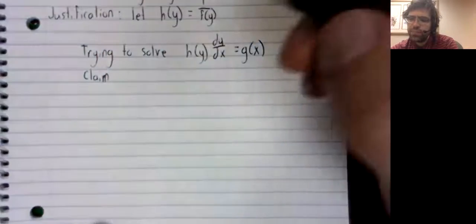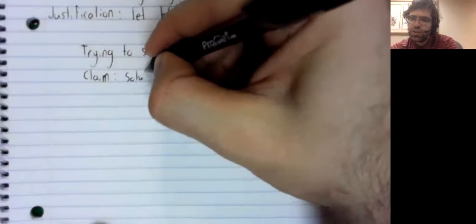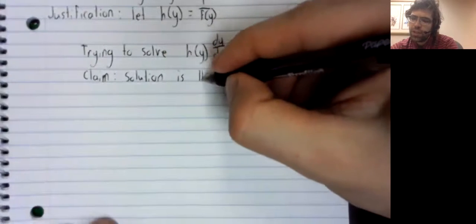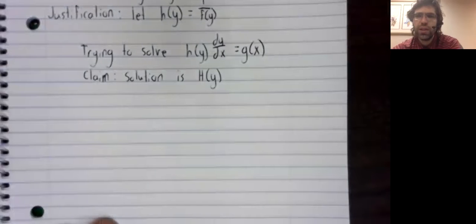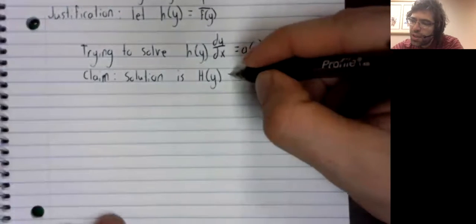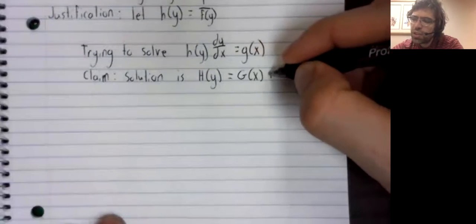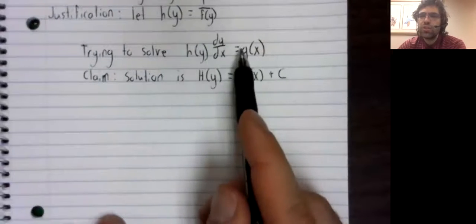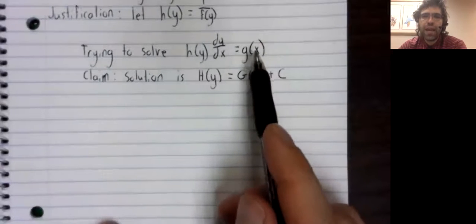And our claim is that the solution is given by this implicit equation. I haven't formally defined implicit equations yet. But our claim is that we can just integrate both sides, integrate h of y, integrate g of x.